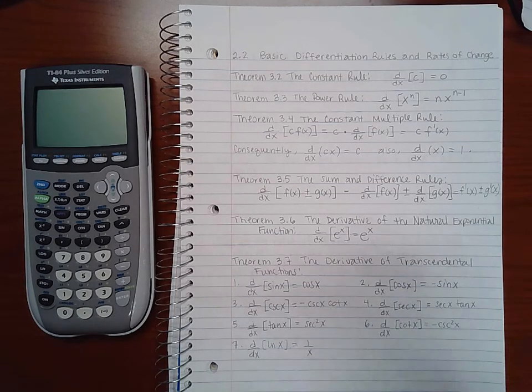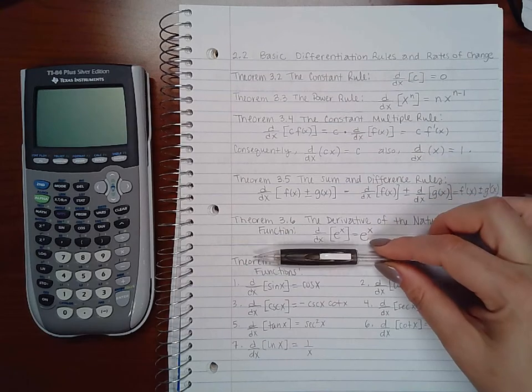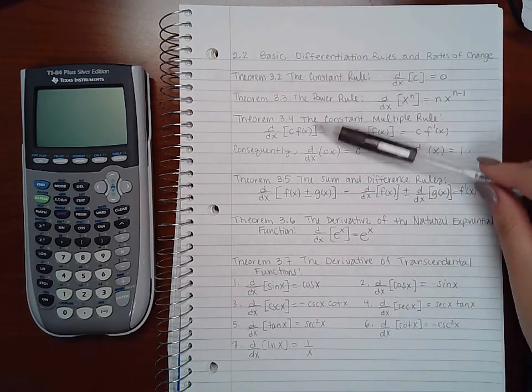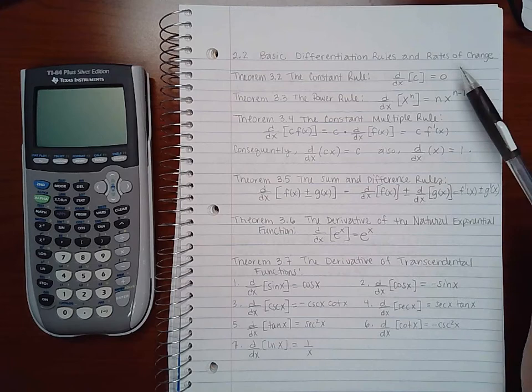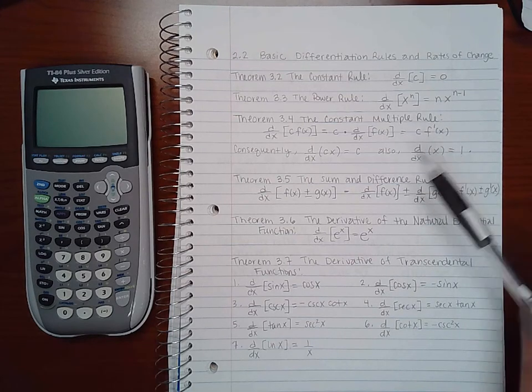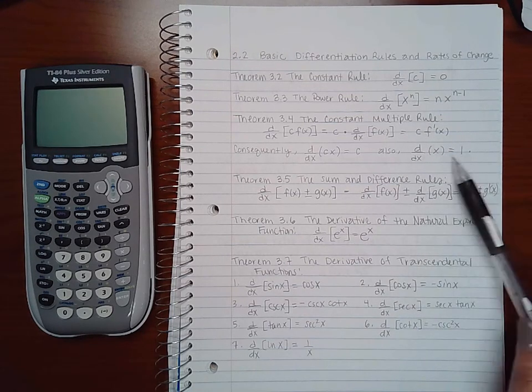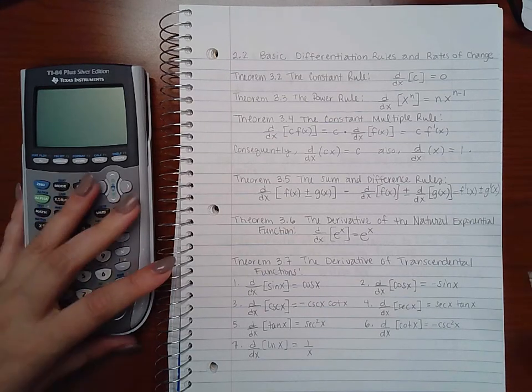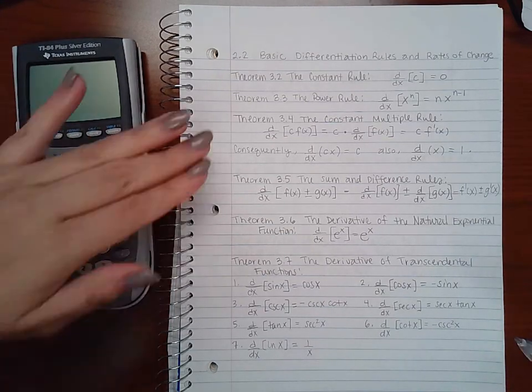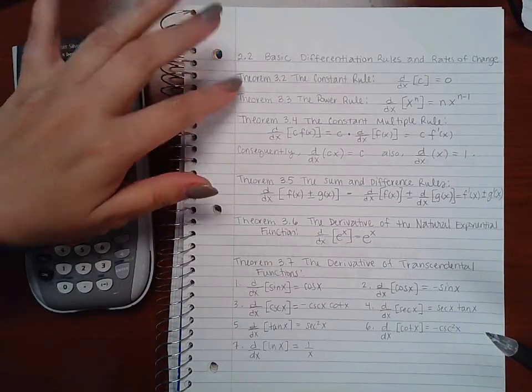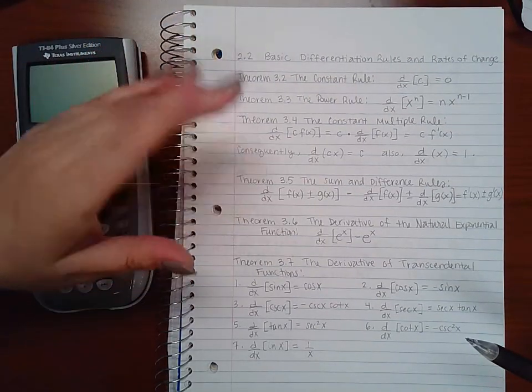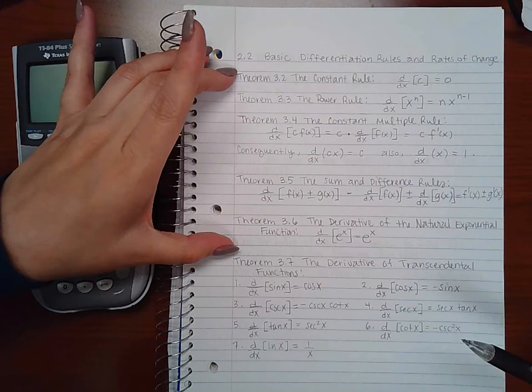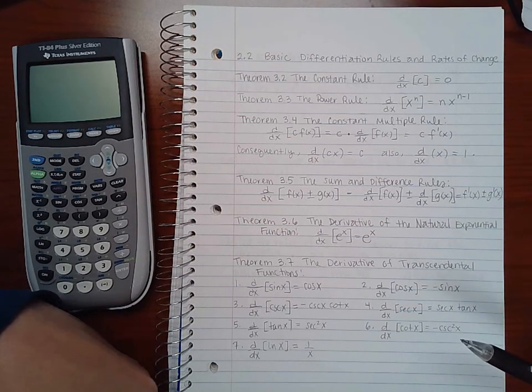Now you could go through the proofs of these, where they actually go through and they take the coordinates of each one of these things, and they end up with each of these things that we have here. But we're not going to go ahead and do that. If you want to see it, you can see it inside the textbook. They do prove each and every one of these. For us, we're going to use them as our rules to differentiate our functions.